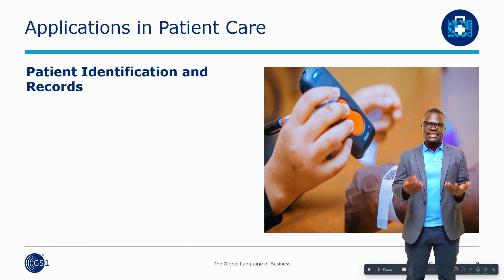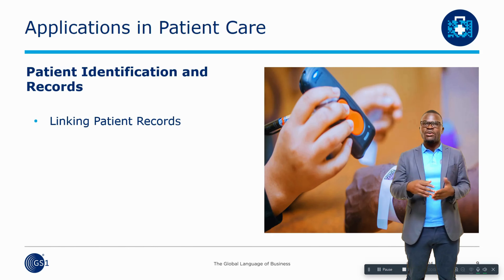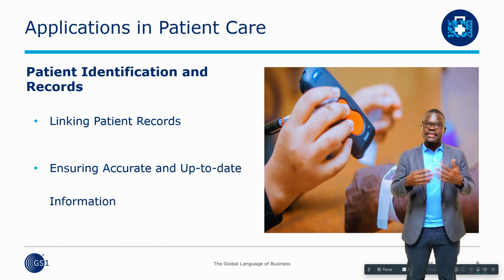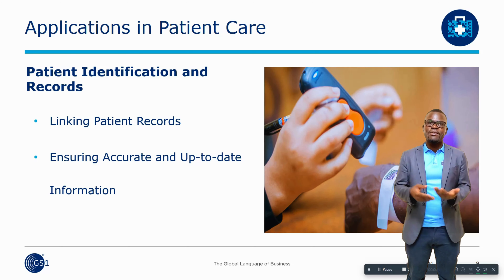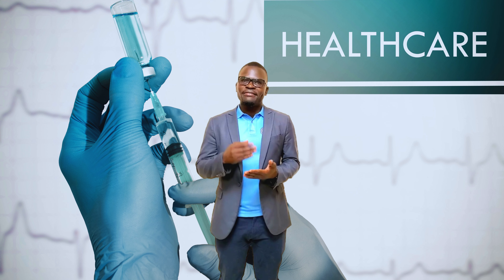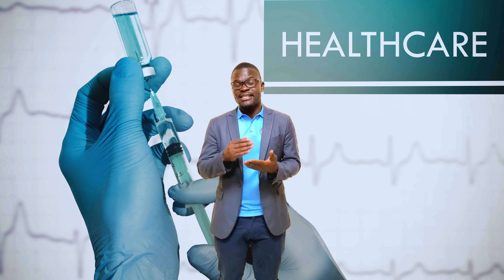Accurate patient identification and record keeping are fundamental to effective healthcare. The GS1 data matrix helps to link all relevant patient data, providing healthcare providers with a complete view of a patient's medical history. This can also ensure that information is accurate and up-to-date, allowing healthcare providers to make informed treatment decisions. At this point, allow me to play a video explaining more on how track and treat is done using GS1 standards. This will give you a visual understanding of the applications we have discussed.